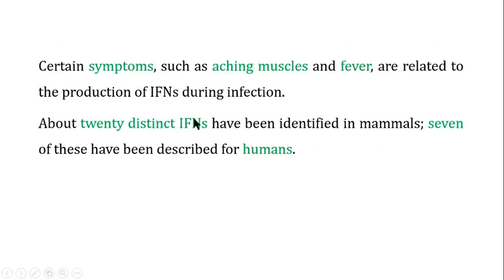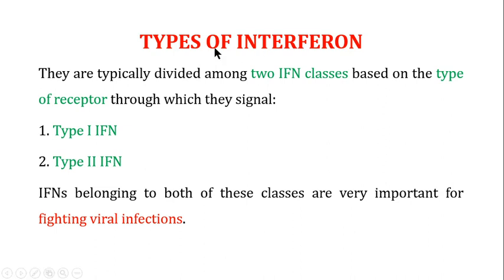The symptoms of interferon production include aching muscles and fevers. About 20 interferons have been identified in mammals, and about seven of them have been described for humans. Interferons are broadly divided into two classes based on the type of receptor through which they signal. The first class is known as type 1 interferon and the second class is known as type 2 interferon, and both classes are very important for fighting viral infections.